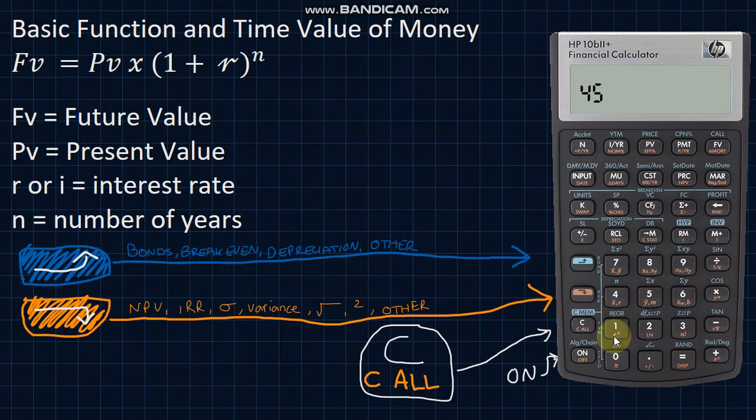Clearing what you see on the screen here can be done in a few different ways. Hitting C with none of the functions engaged will clear what you see on the screen now. And then hitting orange and then C to activate the clear all function will clear all the functions that have been input into the calculator.